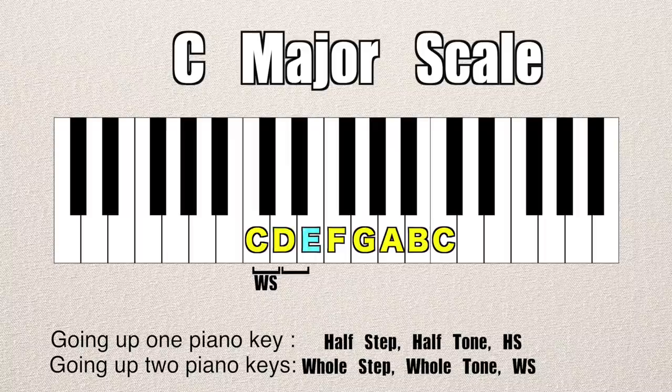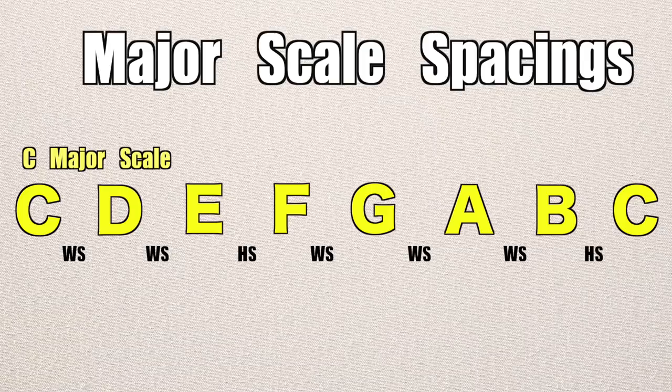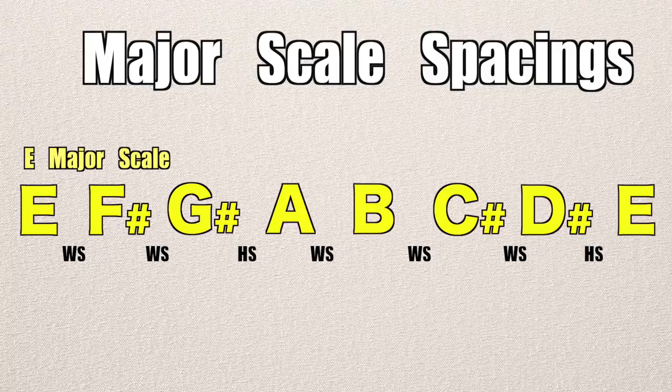From D to E, that's also a whole step. E to F has no key in between, so that's a half step. If we analyzed our entire scale, it would look like this. It never hurts to go back and watch something again if you're not 100% clear — I also have a video that focuses purely on this subject. So we've got the spacings of our major scale. If any of those spacings change, it's no longer a major scale. We can also start our major scale on any note, not just C, assuming it follows the same pattern of whole steps and half steps.